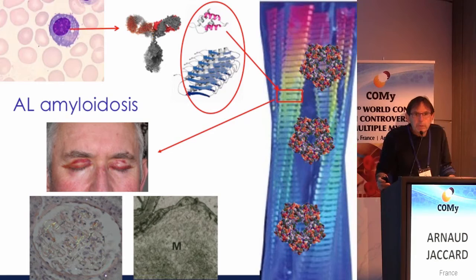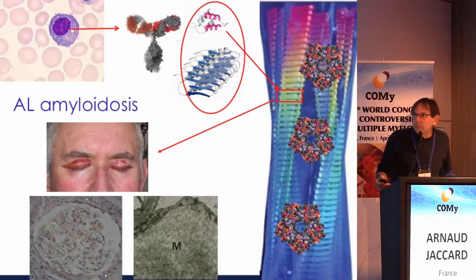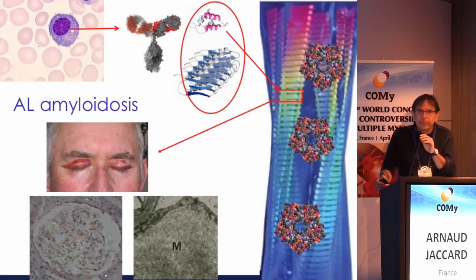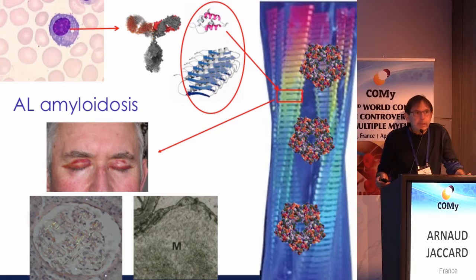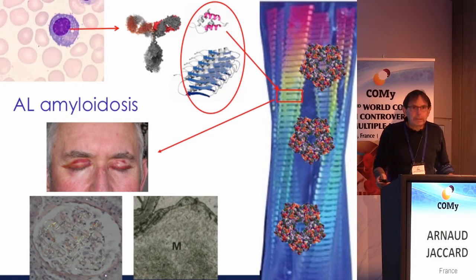In AL amyloidosis, there is always a monoclonal B-cell clone, usually plasma cells, which produce monoclonal immunoglobulin with an excess of free light chain. This free light chain forms oligomers and very organized fibrils. The pentraxin serum amyloid P component (SAP) has a high affinity to these fibrils, which deposit in the intercellular space of organs, fix Congo red, and allow diagnosis.